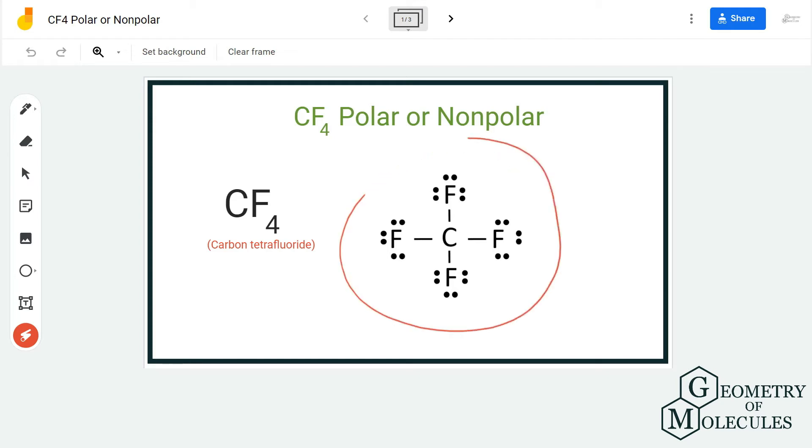When you look at its Lewis structure, it's quite simple because the carbon atom is in the center and all the fluorine atoms are arranged around it. These atoms are arranged in symmetry, so there are chances that this molecule might be nonpolar.